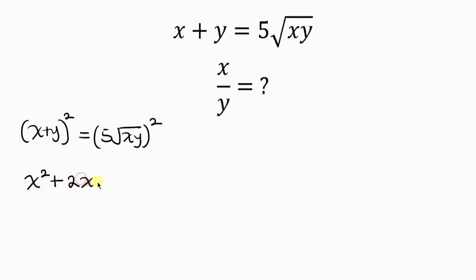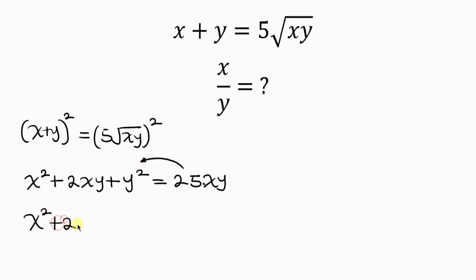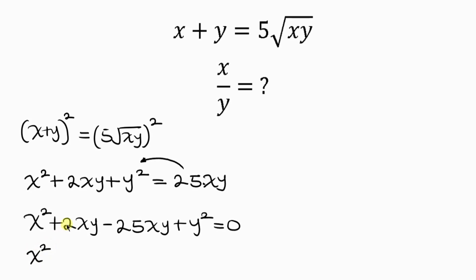That is 2xy plus y squared. This is equal to squaring the right hand side: 5 squared is 25, and the square cancels the square root, leaving behind xy. So we have 25xy. Our next step is to move 25xy to the left hand side, giving us x squared plus 2xy minus 25xy plus y squared equals 0.